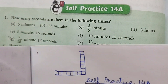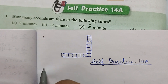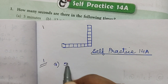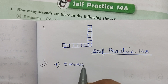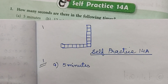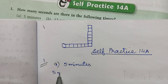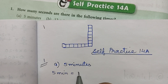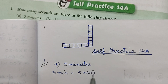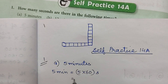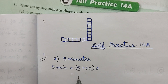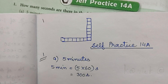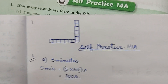First one is 5 minutes. Question 1, part a: 5 minutes. 5 minutes is equal to 5 into 60 seconds, which is equal to 300 seconds.